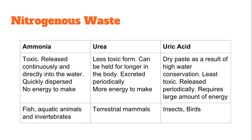Uric acid is excreted as a dry paste due to the high degree of water conservation involved. It is the least toxic form of nitrogenous waste and can also be released periodically, but it requires the most energy to produce. We see this in the paste-like waste produced by insects and birds.